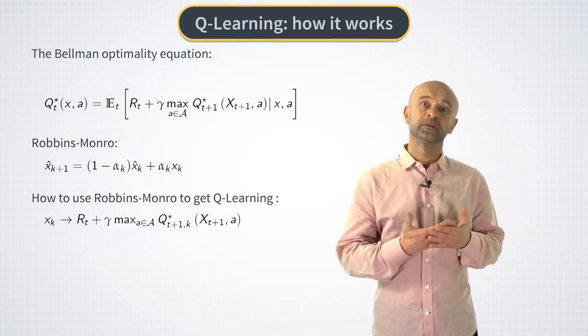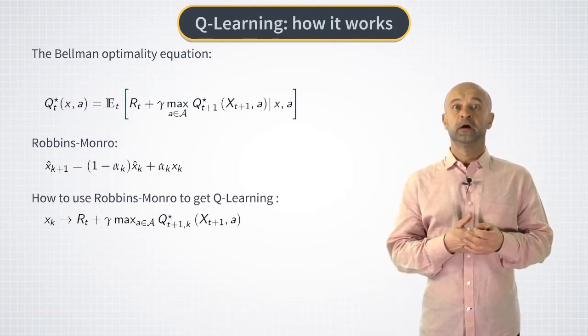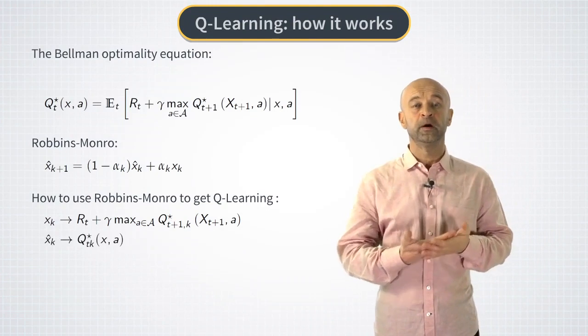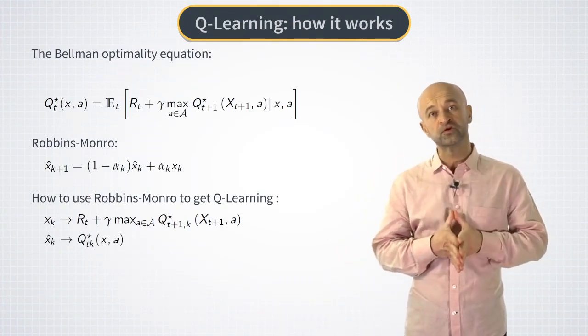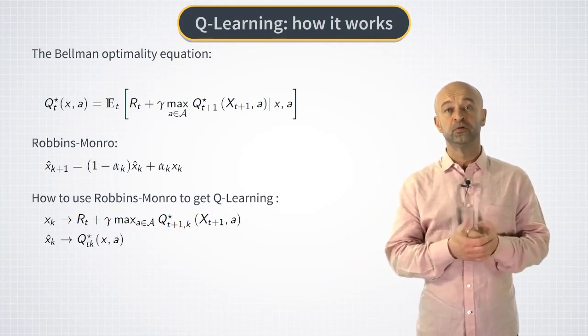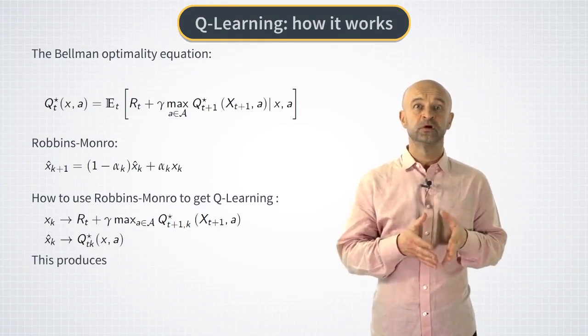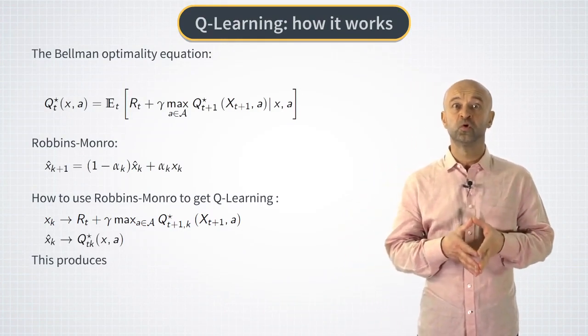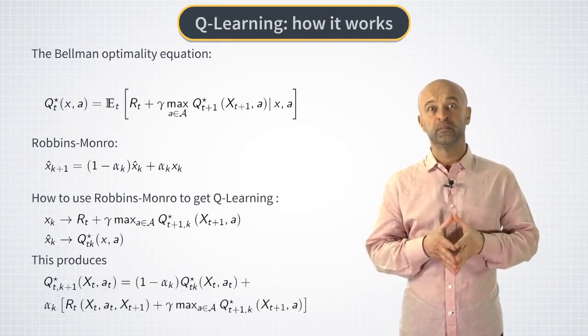The role of the current estimate of the mean x hat t will be played by our current estimate of the optimal Q function. If we specify some scheduling scheme for the learning rate alpha k, these substitutions will produce the famous Q update rule of Q learning that is shown here at the bottom of the slide.